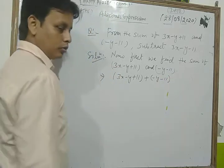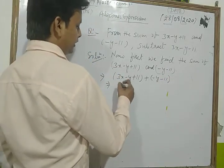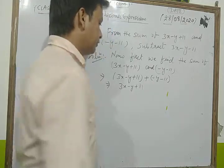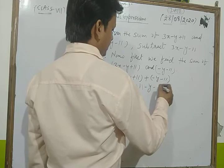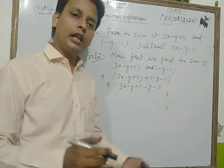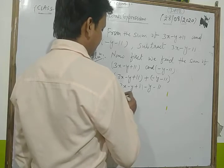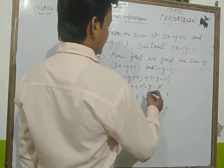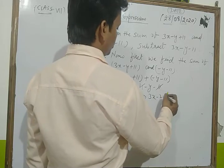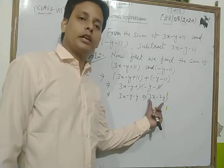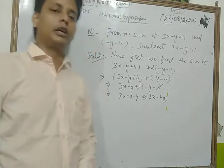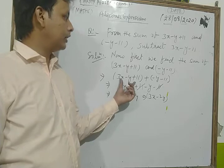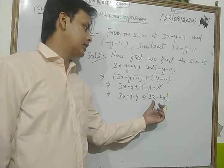Now we open the brackets and collect the like terms. We get 3x as it is. Then minus y minus y gives minus 2y. And plus 11 and minus 11 cancel each other. So the sum of 3x minus y plus 11 and minus y minus 11 is 3x minus 2y.